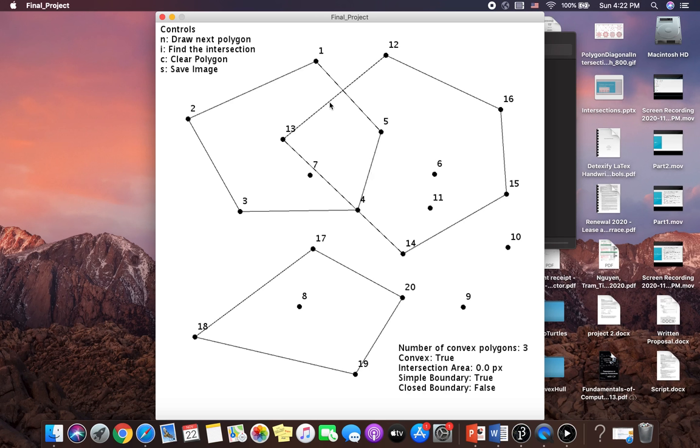Now, you can see the intersection. We don't see any intersection in here once I press the letter I, because they don't have any region where all the polygons overlap.